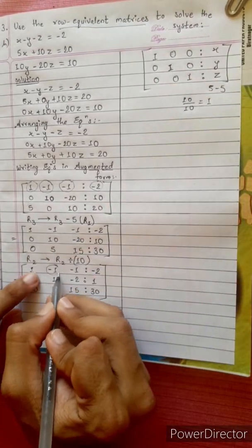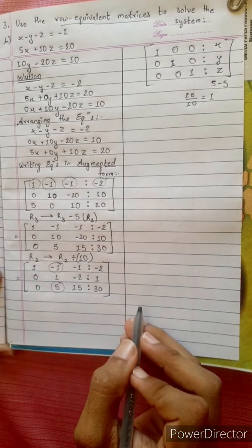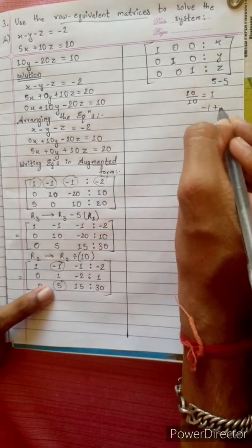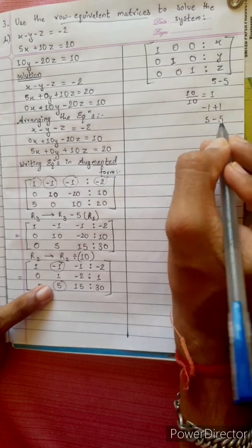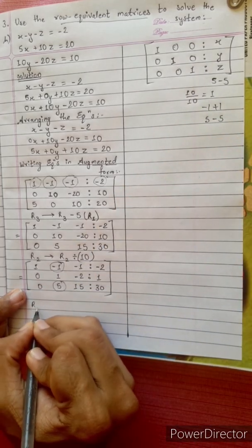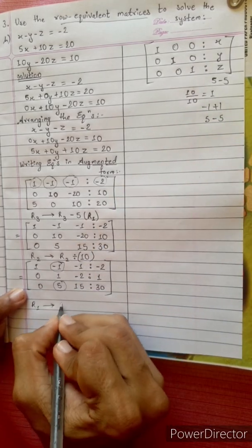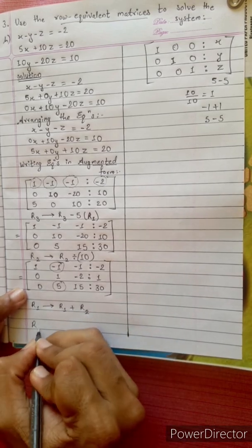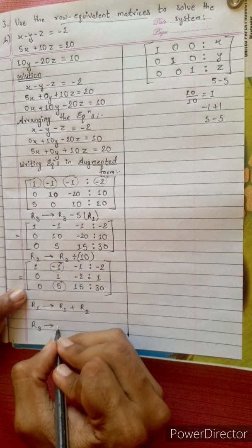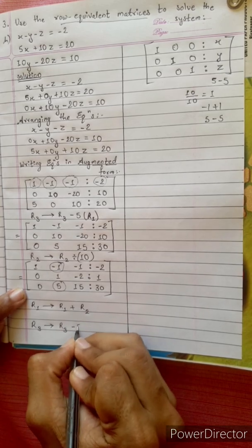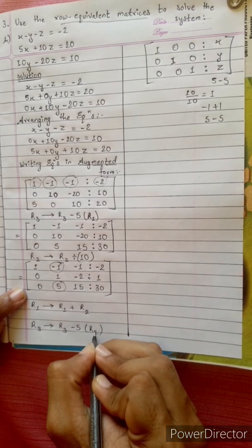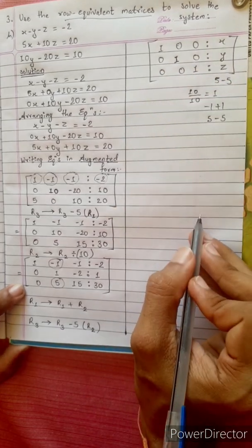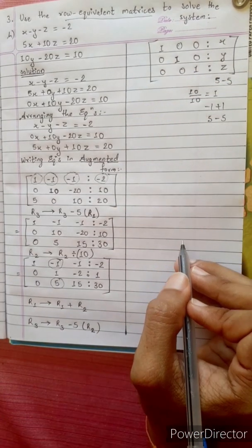Now we need to get zeros in the other rows. Here is 0 and here is 0. Minus 1 plus 1 equals 0, and 5 minus 5 equals 0. Change the first row into R1 plus R2. Then change the third row: R3 minus 5 times R2.